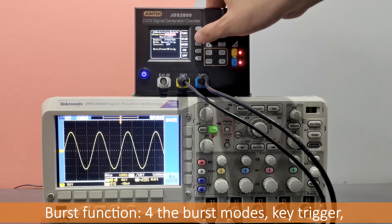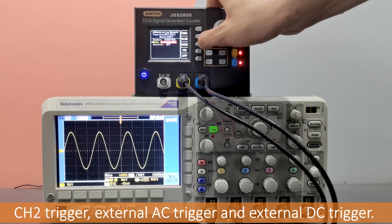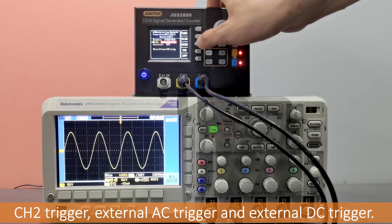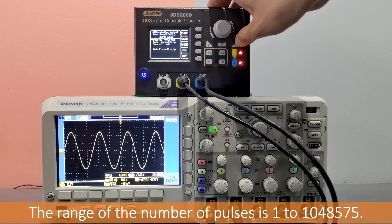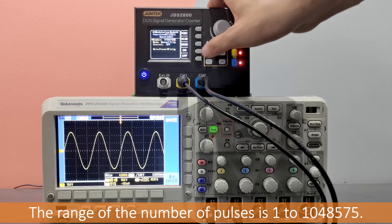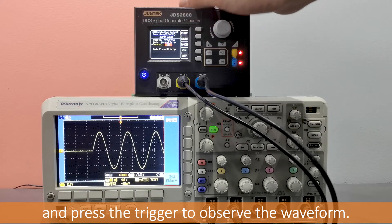Burst function. For the burst modes: key trigger, CH2 trigger, external AC trigger and external DC trigger. The range of the number of pulses is 1 to 1048575. Set the number of pulses to 7, and press the trigger to observe the waveform.